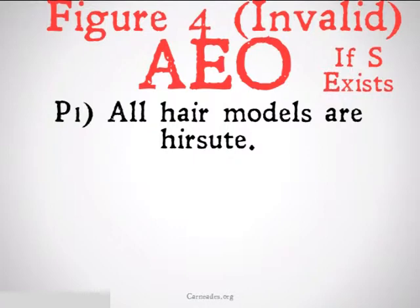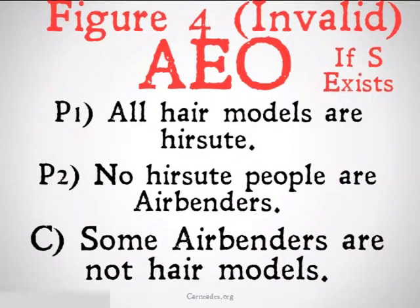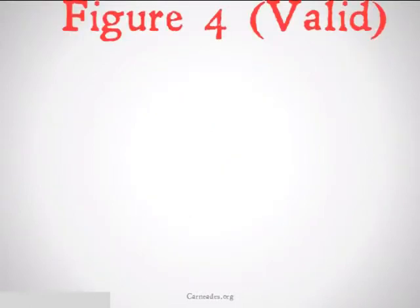An invalid version would be something like: all hair models are hair suit — meaning they have hair. No hair suit people are airbenders. Therefore, some airbenders are not hair models. That's not going to be valid because airbenders don't actually exist, and it's the subject, even though hair models and hair suit people do.